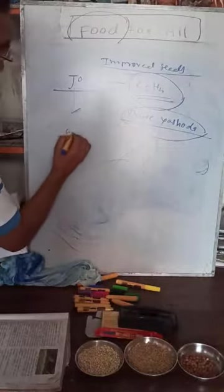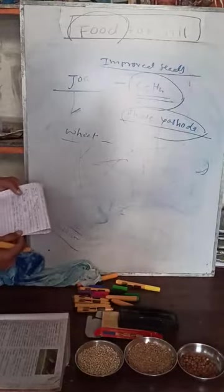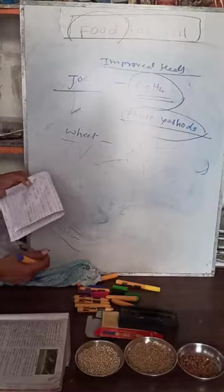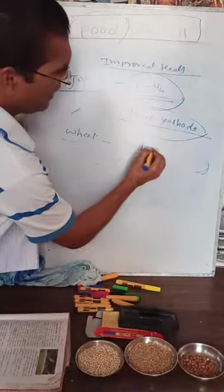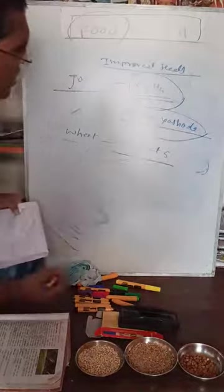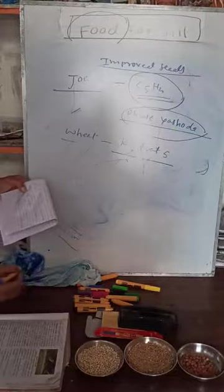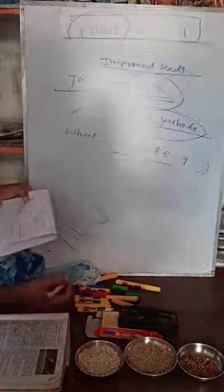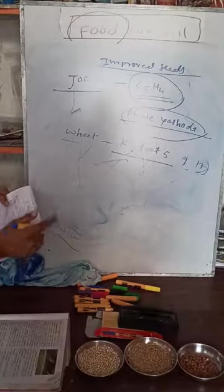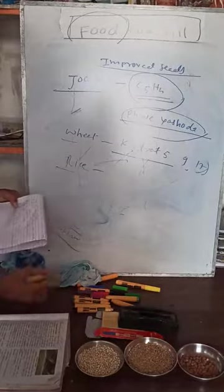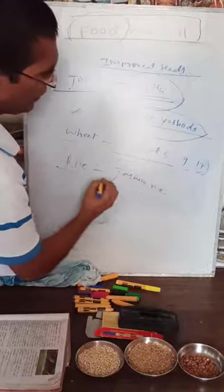For wheat, the improved seeds include HD and Kudrat 5. There is also Kudrat 9 and Kudrat 17 — these are improved seeds of wheat. If you use these, you will get more yield. For rice, the improved seed is Jasmine rice.